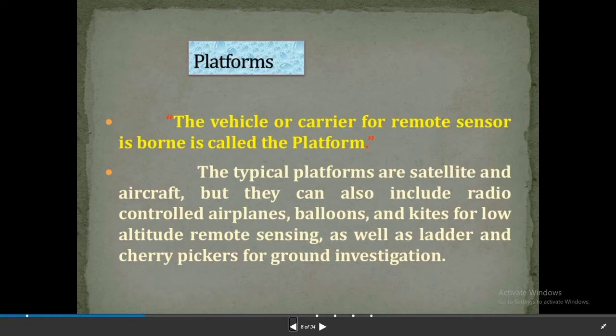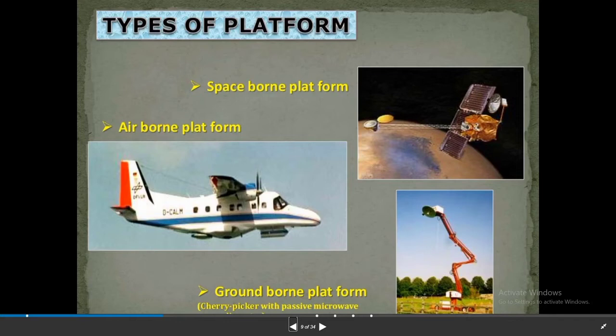What are the platforms? The vehicle or carrier for a remote sensor is called the platform. The typical platforms are satellites and aircraft, but they can also include radio-controlled airplanes, balloons, and kites for low-altitude remote sensing, as well as ladders and cherry pickers for ground investigation. Types of platforms: number one is space-borne platform, number two is air-borne platform, and number three is ground-borne platform.